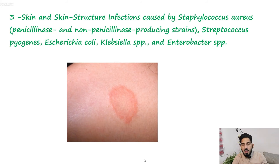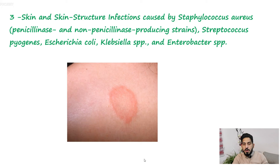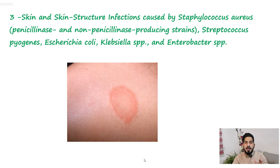A third indication for second generation cephalosporins is skin and skin structure infections caused by Staphylococcus aureus, including both penicillinase-producing and non-penicillinase-producing strains. Staphylococcus aureus is the most common organism causing skin and skin structure infections.